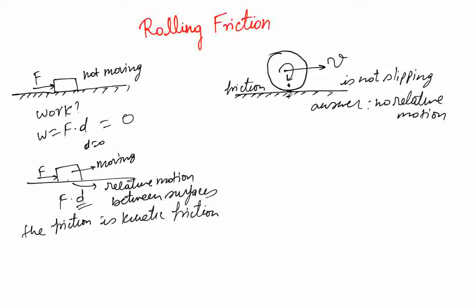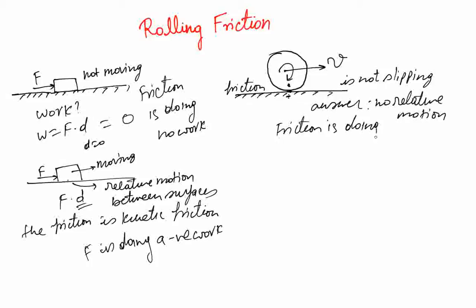So if there is no relative motion, that means friction is not able to do any work. In the previous case, friction was doing negative work. But in this case, friction is doing no work because there is no motion. As there is no relative motion between the two surfaces, again the answer is friction is doing no work.